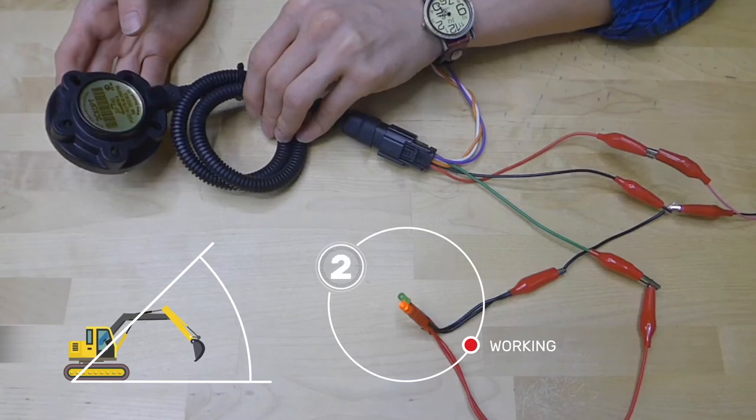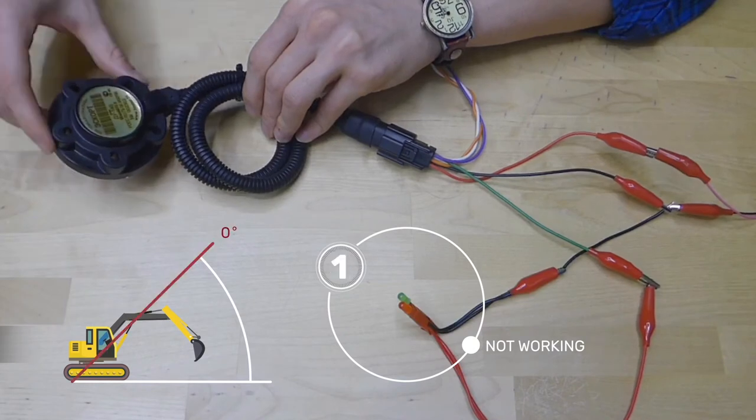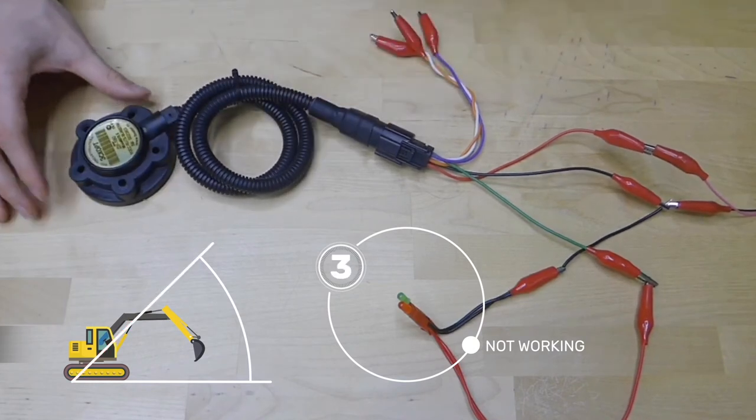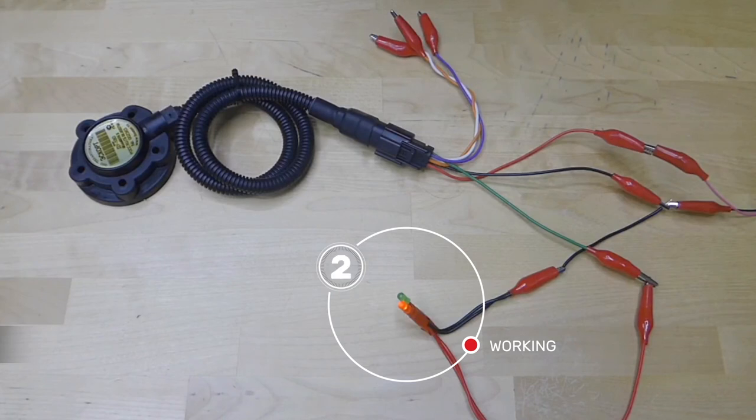Otherwise, the program waits for one more period to give it a last chance. If the angle doesn't change enough again, the output closes and we believe the machinery has stopped working.